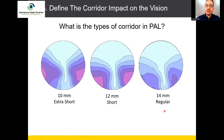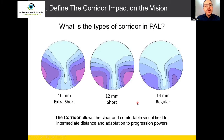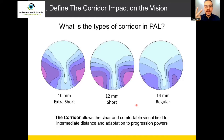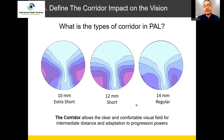We'll focus here on the three standard corridor types: extra short, short, and regular. The corridor allows a clear and comfortable visual field for intermediate distance and adaptation to progression problems. The corridor does two things: first, it allows the user to see intermediate distance; and second, it aids adaptation to progression powers.